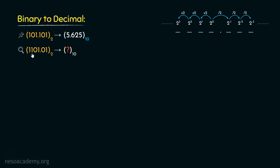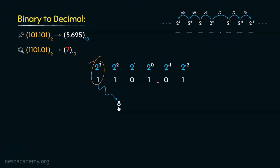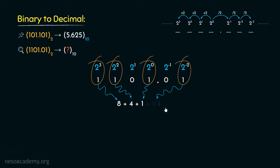For practice, let's find the decimal equivalent of the binary value 1101 radix point 01. We have 4 bits before the radix point and 2 bits afterwards. We start with 2 cubed, and the least significant bit has place value 2 to the power minus 2. The 1 under 2 cubed gives 8; the 1 under 2 squared gives 4; the 1 under 2 to the power 0 gives 1; and after the radix point, the 1 under 2 to the power minus 2 gives 1/4. So 8 + 4 + 1 = 13, and 1/4 = 0.25, giving us 13.25. This is how we convert any floating point binary value to its equivalent decimal.